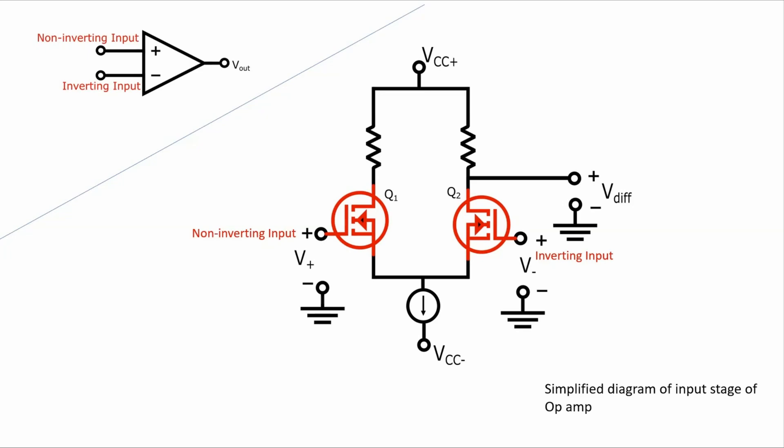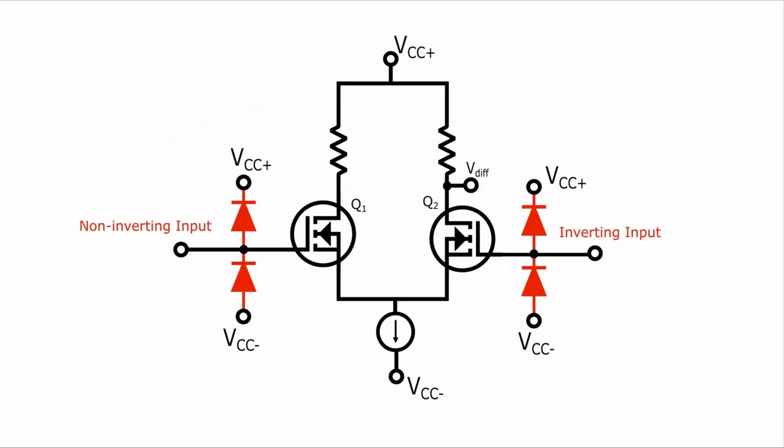If the op-amp uses FETs, the input biasing current will be even lower but still not zero. And in fact, most of the input bias current for op-amps designed with FETs is actually not due to current into the gate, but actually due to current leakage through the input protection diodes at the input. In normal operation, all four of these diodes are reverse biased, but they will all have some leakage current through them contributing to the input bias current.